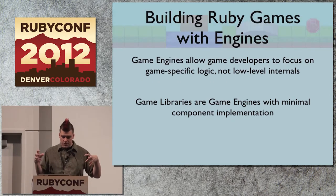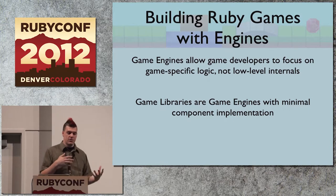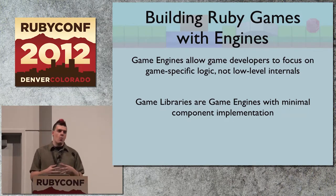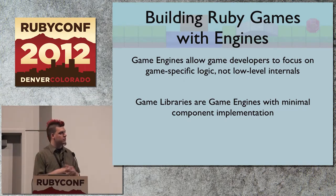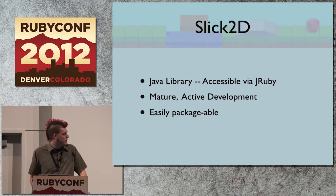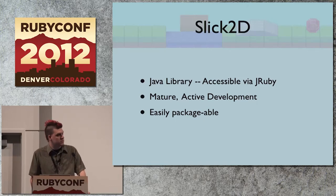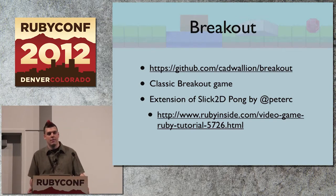Let's build Ruby games with engines that are fully end-to-end in Ruby. Game engines allow developers to focus on game-specific logic, not low-level internals — they're more isolated components closer to the operating system, handling low-level interfacing so you can build in higher abstractions. The first one we're going to look at is Slick2D, which is a great Java library you can access through JRuby. There's been a lot of development on it, and one nice aspect is that because it's a Java library, you can package it up easily into a jar file and transmit your stuff from person to person.